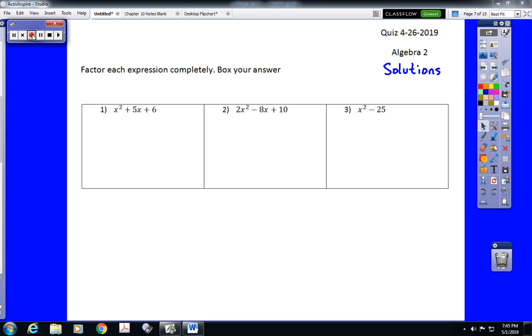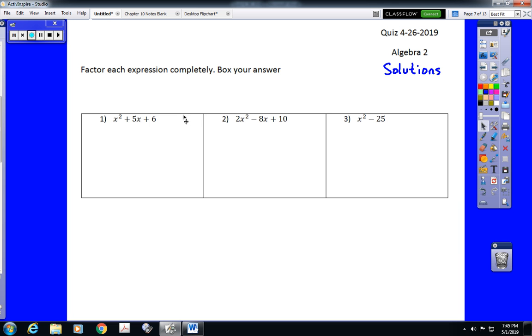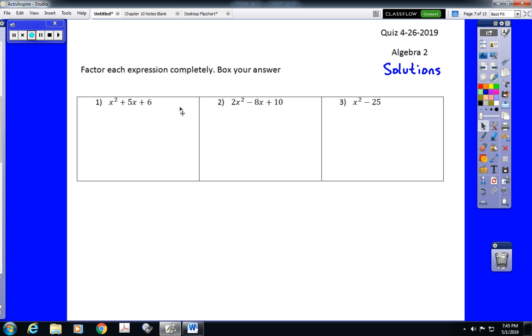The directions say factor each expression completely, and box your answer. I did not really take off any points if you didn't box your answer, but it would be nice if you would. So, number one is a basic trinomial. We are looking for a pair of numbers that multiplies to six and adds to five. That would be two and three. Since this is basic trinomial factoring, we can go straight to our answer, and we should have the binomials x plus two and x plus three.